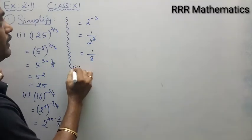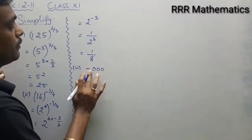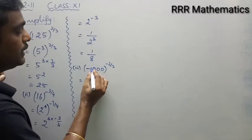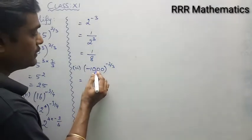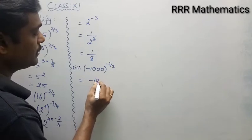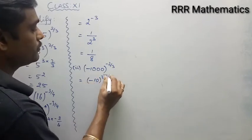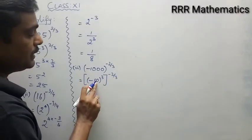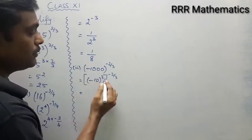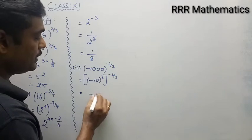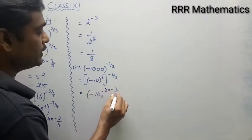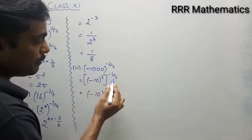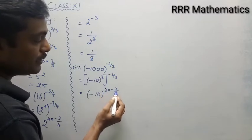Third problem. We have minus 1000 whole power minus 2 by 3. Now this 1000 can be written as minus 10 whole cubed, because minus × minus × minus = minus, and 10 × 10 × 10 = 1000. So I can multiply the power: (−10)³ whole power minus 2 by 3. The 3s cancel.